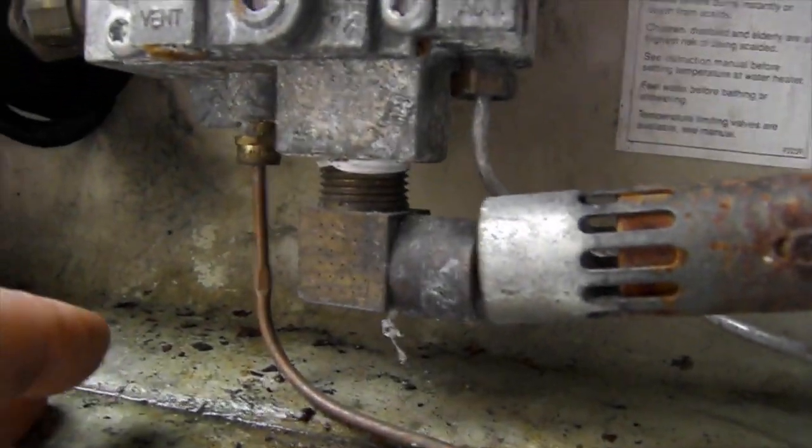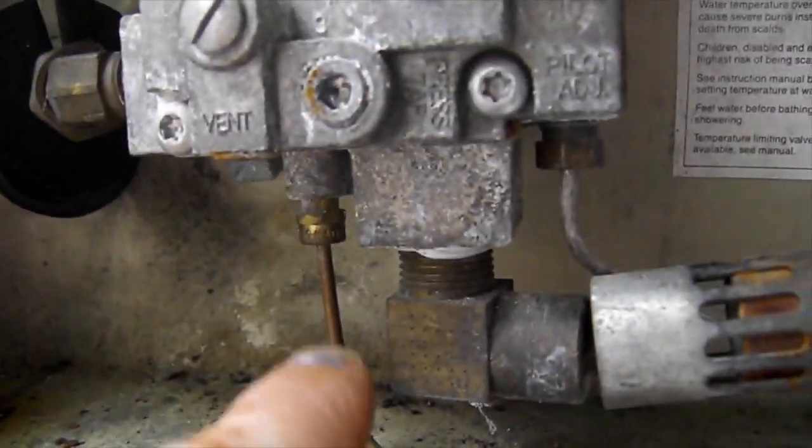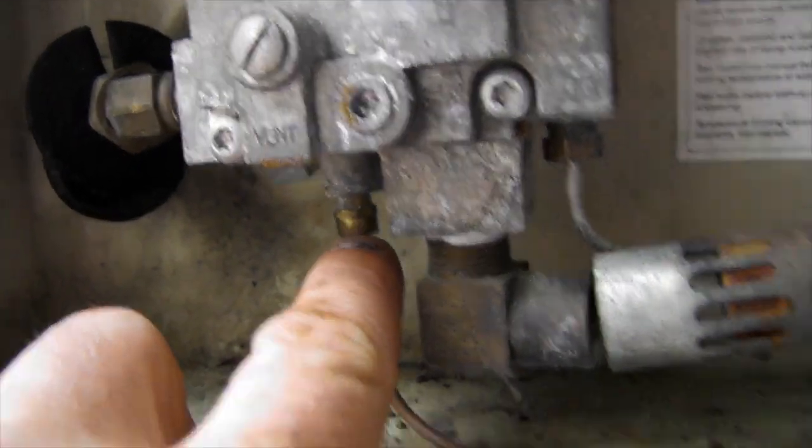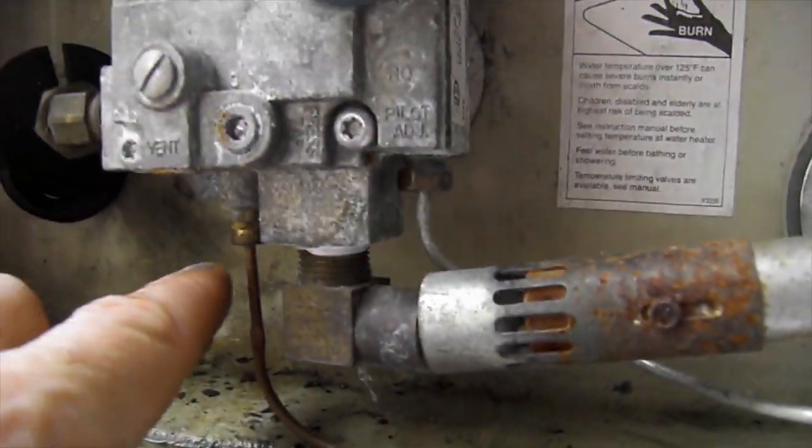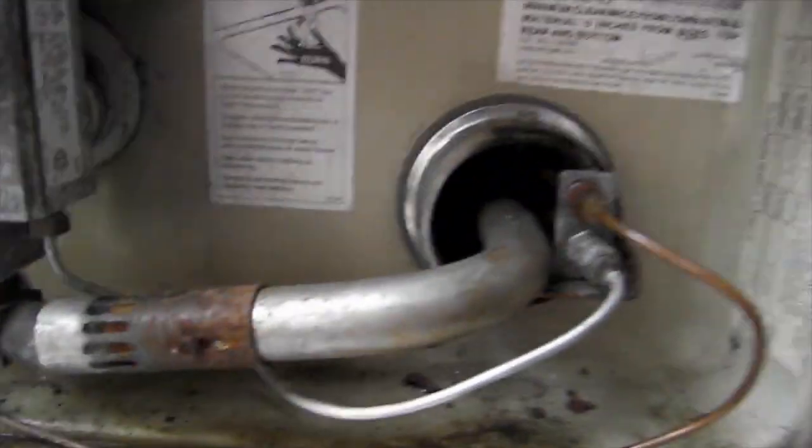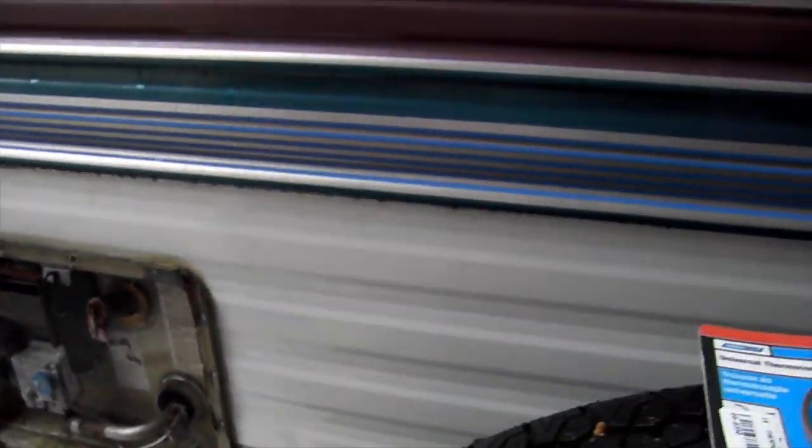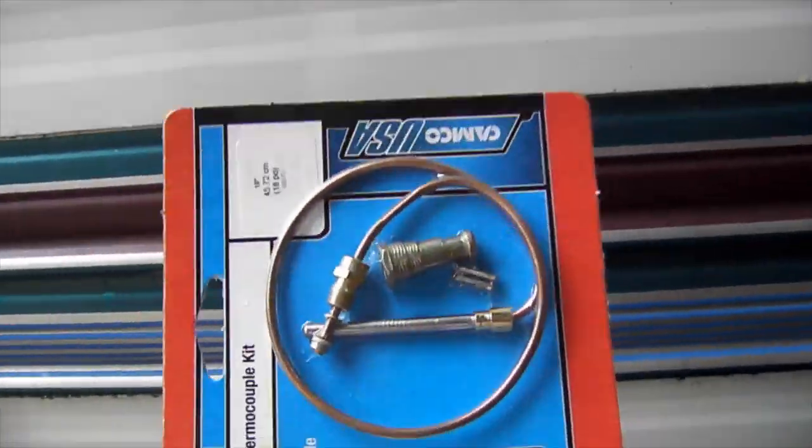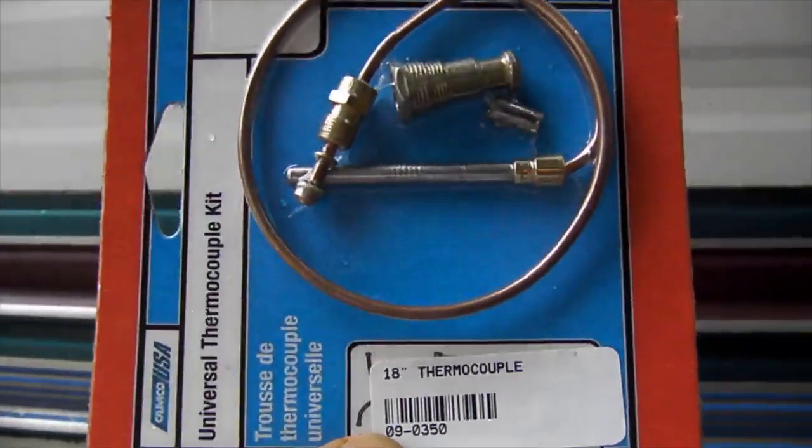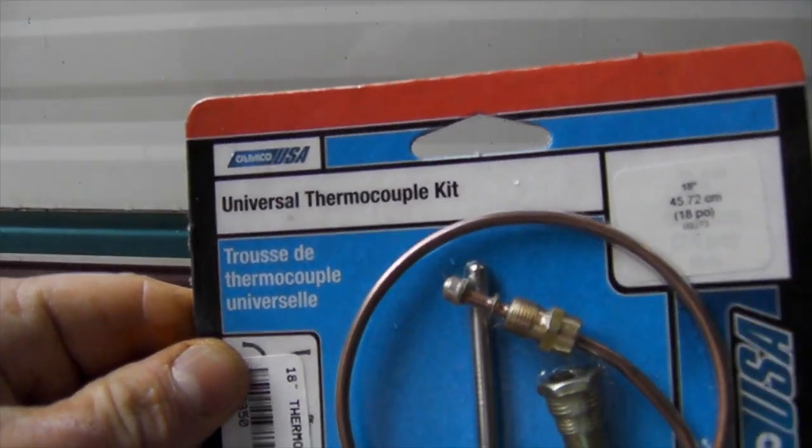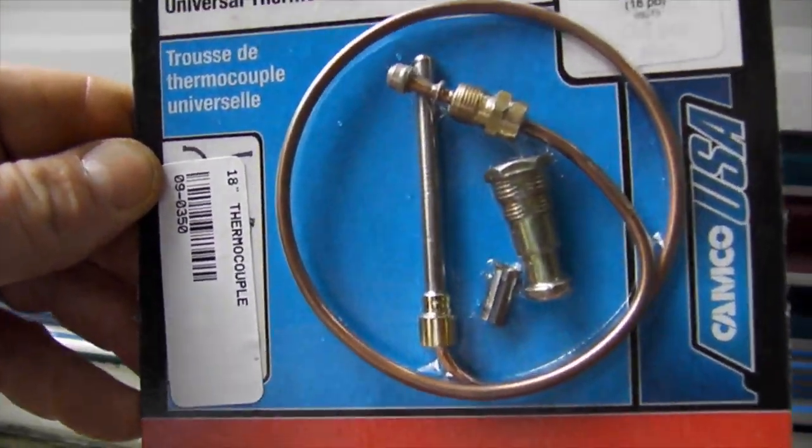You just go to your local RV shop. The hardware stores, at least the ones around here, don't typically carry thermocouples for RVs and travel trailers. So go to your local RV shop and pick up one of these. This is just a universal thermocouple kit. I think it was about ten bucks, wasn't too bad.